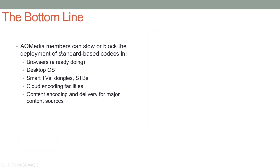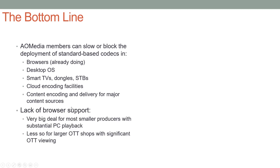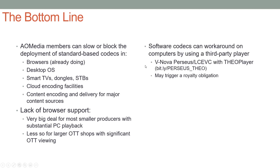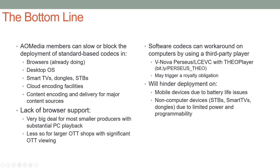The bottom line is AOM members can selectively block the deployment of standards-based codecs in many different markets. Lack of browser support is a big deal for smaller producers with substantial PC playback. Large OTT shops like Netflix or Hulu have most viewers on living room devices, so they don't need the browser as much. Software codecs can work around this on computers using a third-party player — VNOVA distributed their Perseus technology (now LCEVC) using the Theo player — but this may trigger a royalty obligation. Hardware codecs must wait until devices support them. Alliance for Open Media is a huge deal because they control big blocks of content, playback, infrastructure, and components.